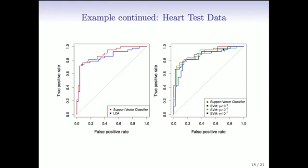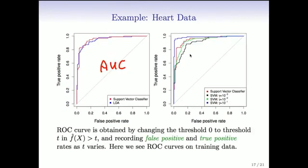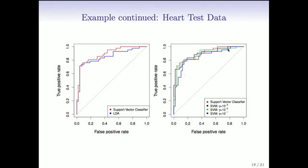In the right-hand panel, we look at the different support vector machines again. Now, the one with the biggest value of gamma actually does the worst. So while it was doing the best on the training data, it actually does the worst on the test data. Here, the linear support vector machine does pretty much the best. And the most regularized SVM is with gamma 10 to the minus 3, is doing about the same.